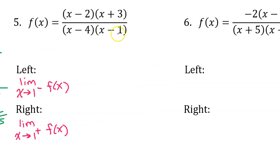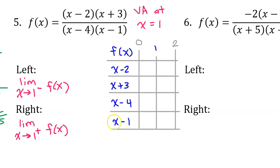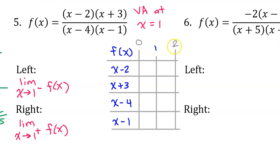For number 5, the x minus 1 factor does not cancel out with anything, so we have a vertical asymptote at x equals 1. That means the left and right limits will both be some kind of infinity. To figure out whether it's positive or negative infinity, we make a partial sign chart covering only the intervals near x equals 1 — from 0 to 2. We need to determine whether each factor is positive or negative near 1. x minus 1 gives a zero at 1, so it's the only factor that might change signs there — it's negative to the left and positive to the right.